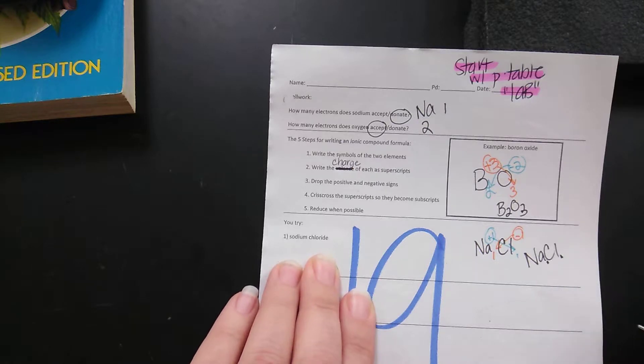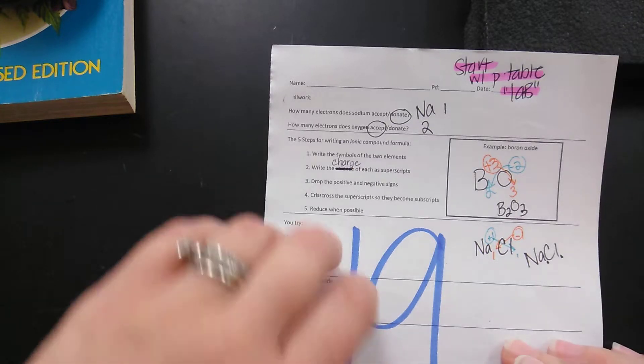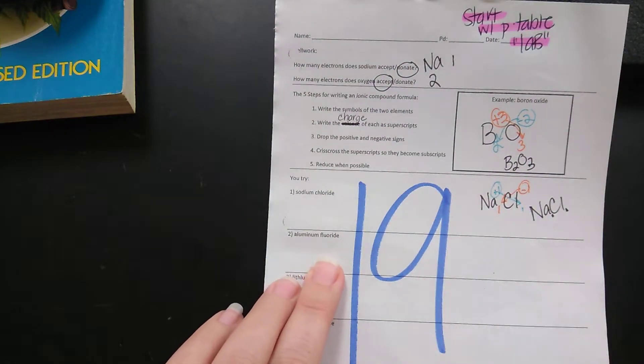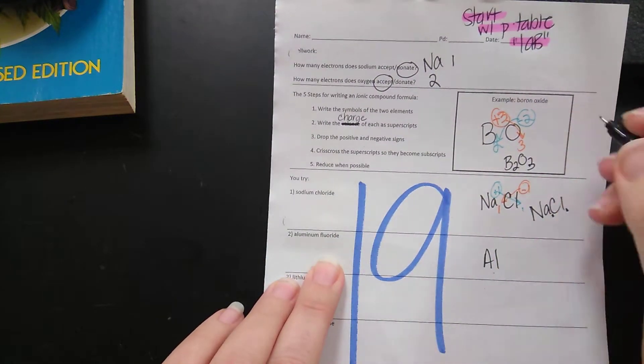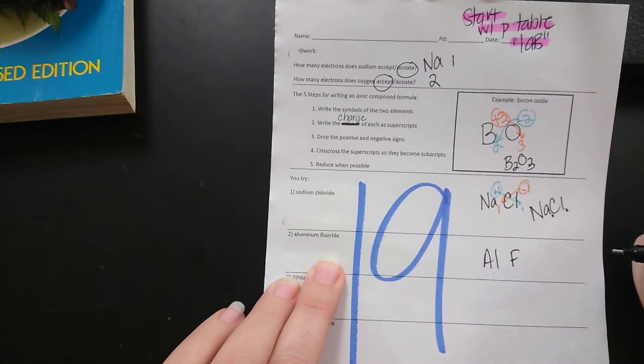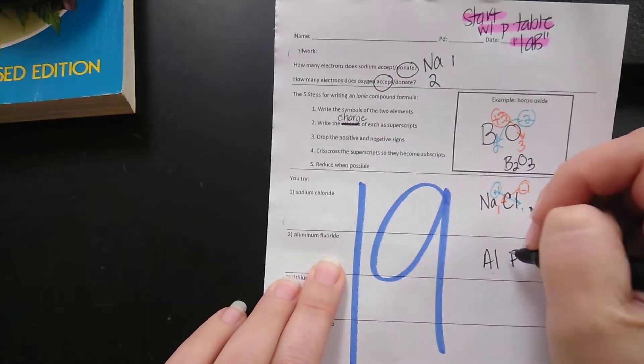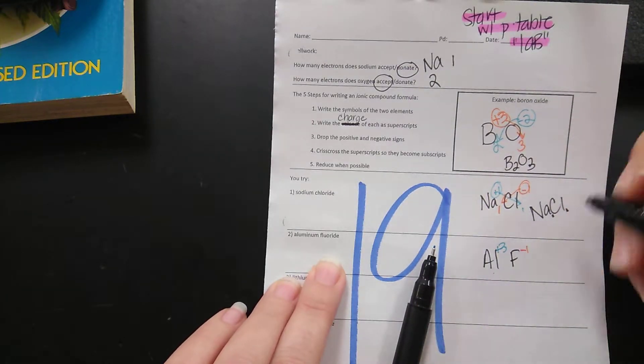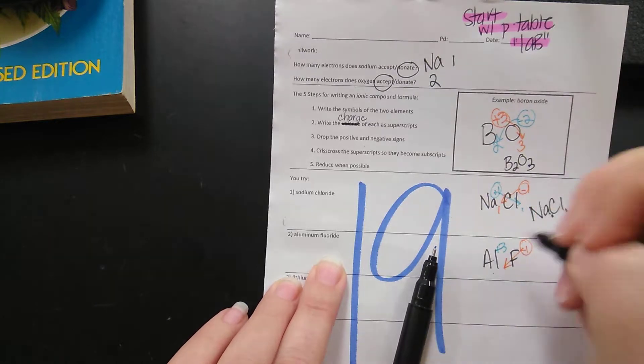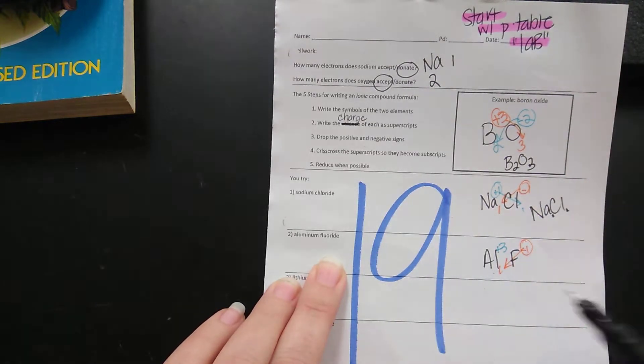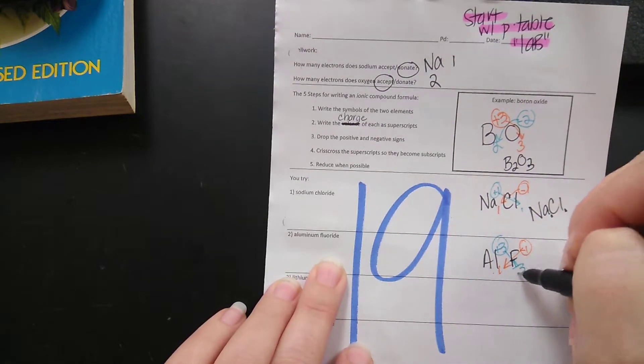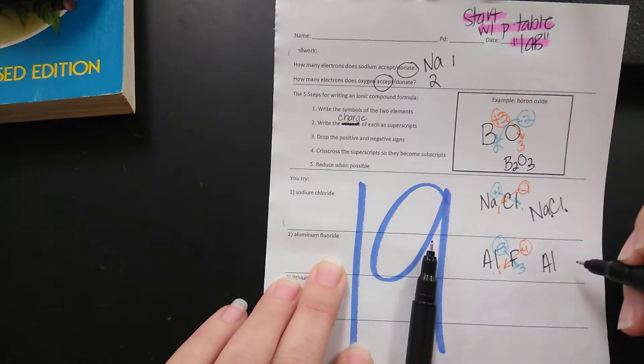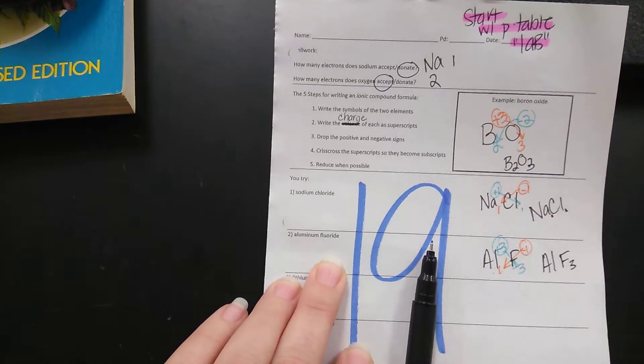So as in your math class when x is there, present, it means that there's already one. It's assumed because it's there. Next we're going to have aluminum fluoride, aluminum is Al, fluoride is F, aluminum is in group three so it has a positive three charge, fluorine is in group seven, negative one. We're now going to crisscross just the number. So when aluminum and fluorine react together they do so in a one to three ratio.